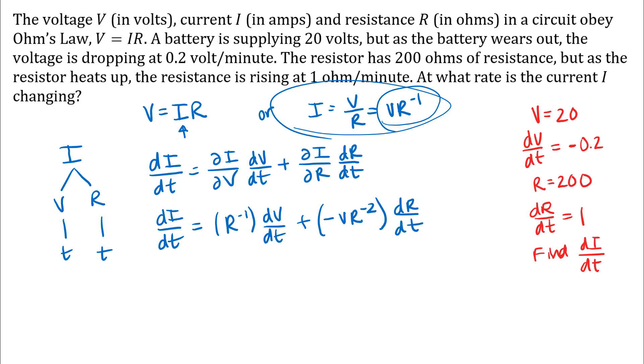Okay, so now I'm going to look at the information I was given. I have values to plug in for V and R, I have values to plug in for dV/dt and dR/dt, and I need to find dI/dt. So it looks like we've got everything we need and we can just plug in our values and simplify to get our answer.